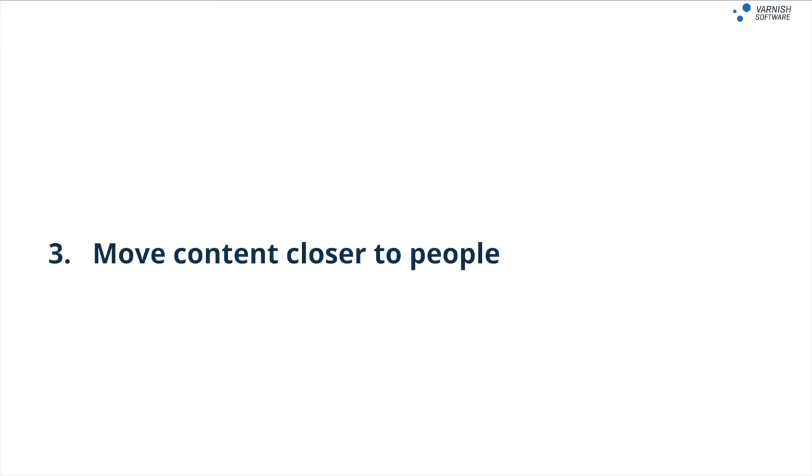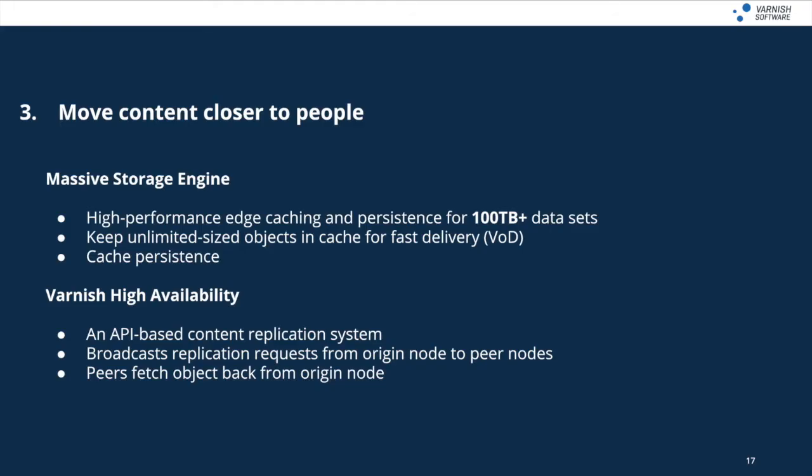Third, you can move content closer to the people who want it to significantly decrease latency. One important feature for this is the Varnish Massive Storage Engine, which provides multi-terabyte edge storage so your most popular content can be kept at the edge ready for when it's requested. These can be very large objects for HD video on demand, and the content can persist across restarts, adding even more resilience. Varnish High Availability broadcasts requests across multiple nodes, replicating content across a potentially global distribution of servers for massively increased resilience.